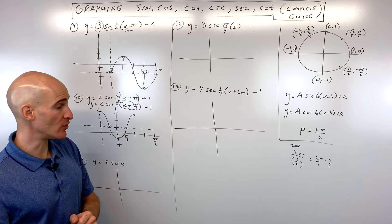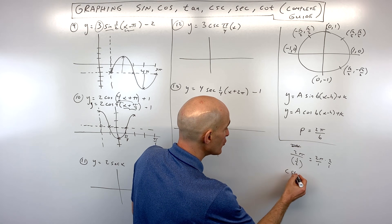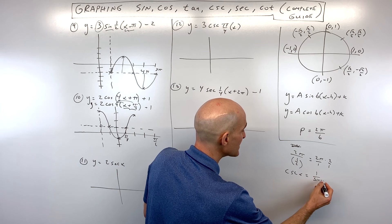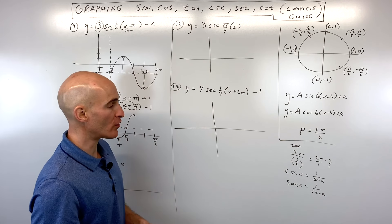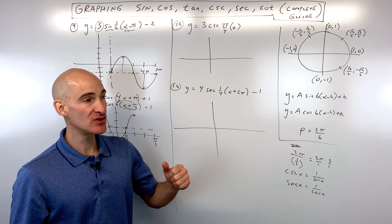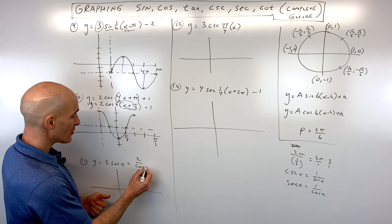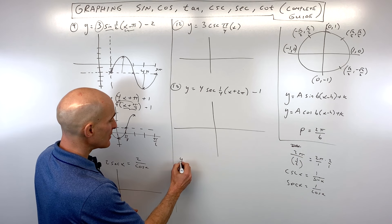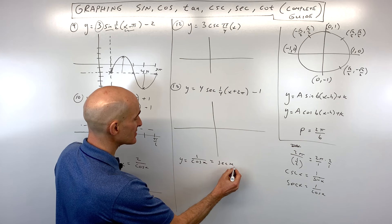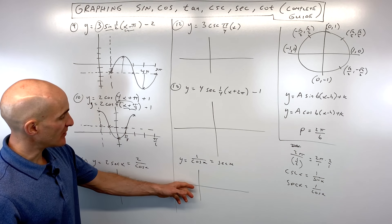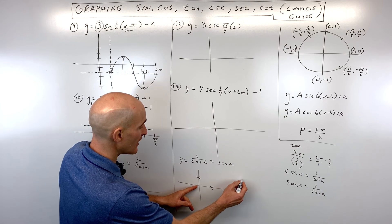Now we're going to transition to working with the secant and cosecant graphs. The cosecant is the reciprocal of the sine — one over sine. The secant is the reciprocal of the cosine — one over cosine. For the basic secant graph, wherever the cosine value is one, secant is one divided by one, which is still one. At pi over two the cosine is zero, so one divided by zero is undefined — we get a vertical asymptote. At pi the cosine is negative one, so secant is negative one. At three pi over two the cosine is zero again — another vertical asymptote. So wherever the graph crosses the x-axis, that's where the vertical asymptotes are.